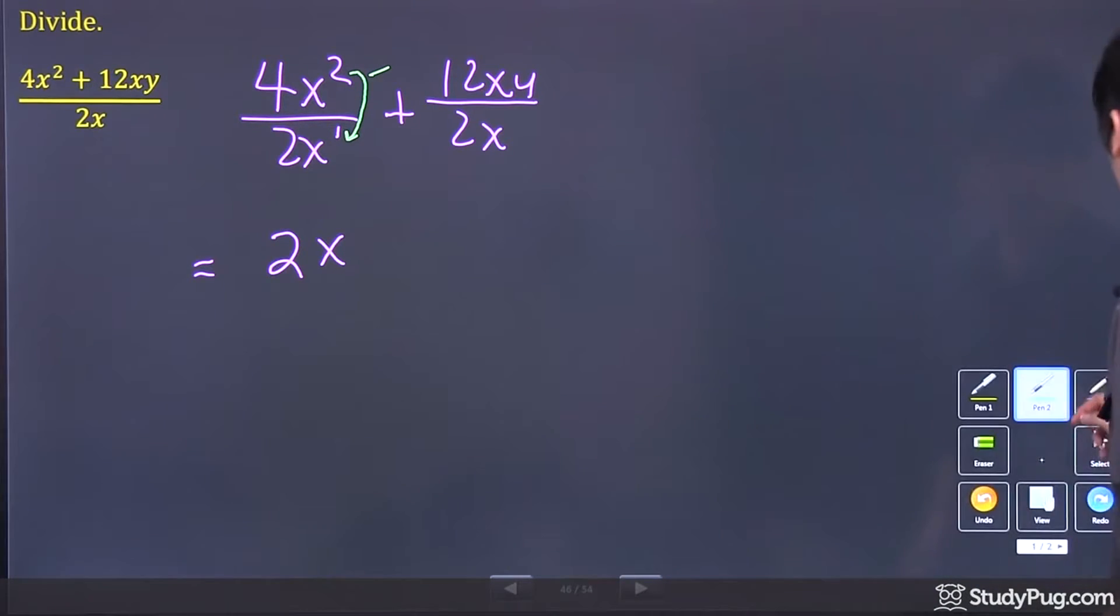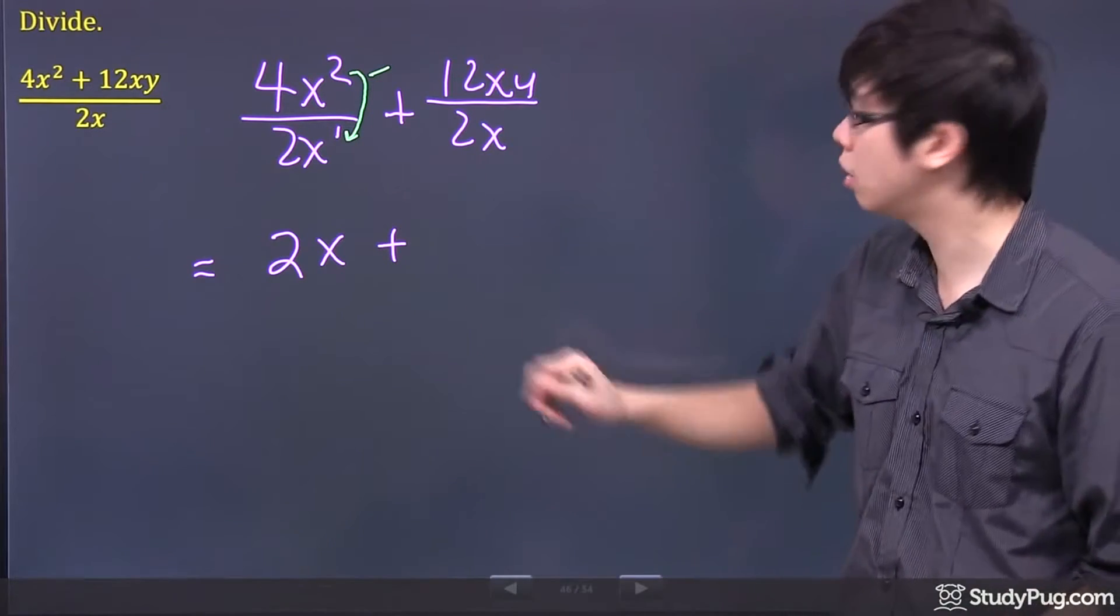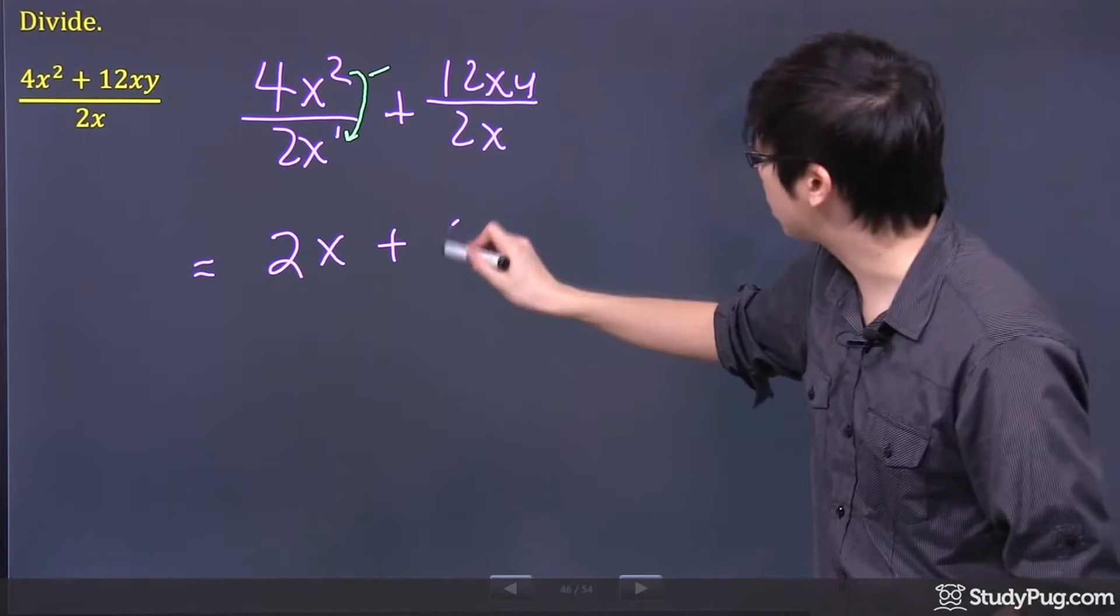Then we go back to the question for the next part. We got a plus sign right there. So let's just put a plus sign. What's 12 over 2? We got a 6.